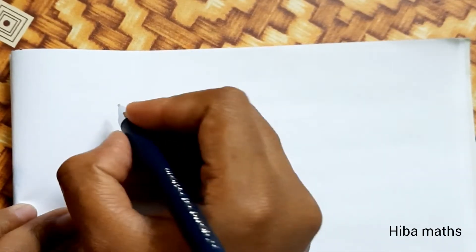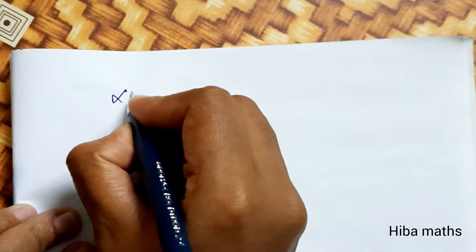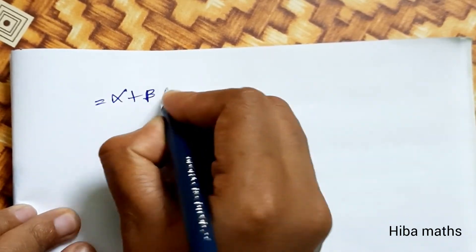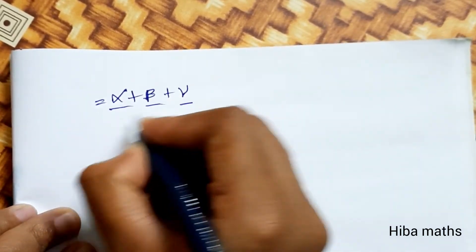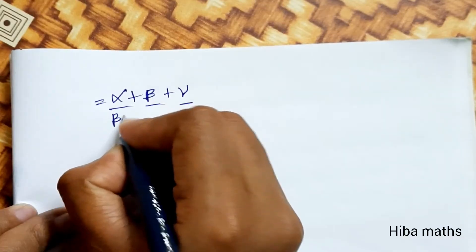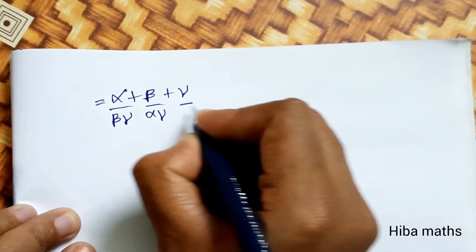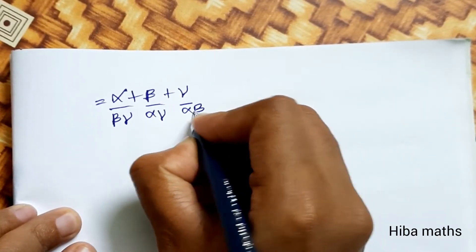We need to find alpha plus beta plus gamma, and the individual products: beta·gamma, alpha·gamma, and alpha·beta, which will be used in our substitution.